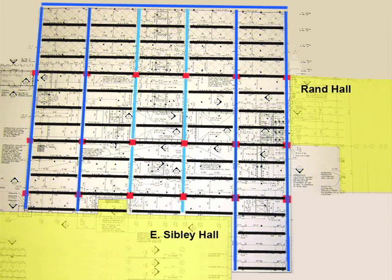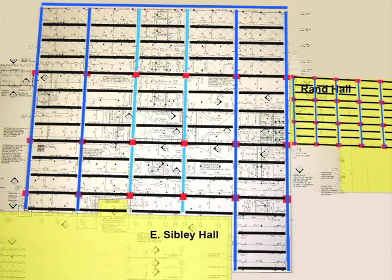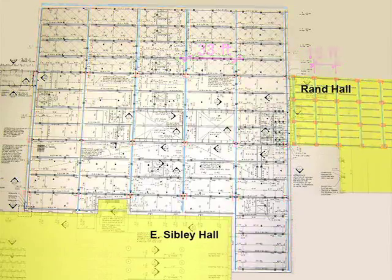It's interesting to compare the pattern of Milstein's beams, girders, and columns to those in Rand Hall. The hierarchical arrangement is identical. What differs dramatically are the spans. As the strength of steel has increased since 1917, when Rand Hall was built, the 15-foot spans typical in those days have more than doubled.